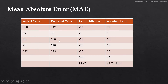To better understand, let's take an example with actual data and predicted values. We calculate the mean absolute error using the absolute value of the error difference. We add all those absolute values — the addition is 63 — and then divide by the number of errors, which is 5.